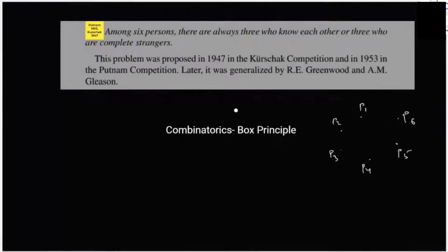What we do is denote if P1 and P2 are friends, then we join them with a white line. And if they are strangers, then we denote it by a yellow line. This is our basic thing that we're going to do.